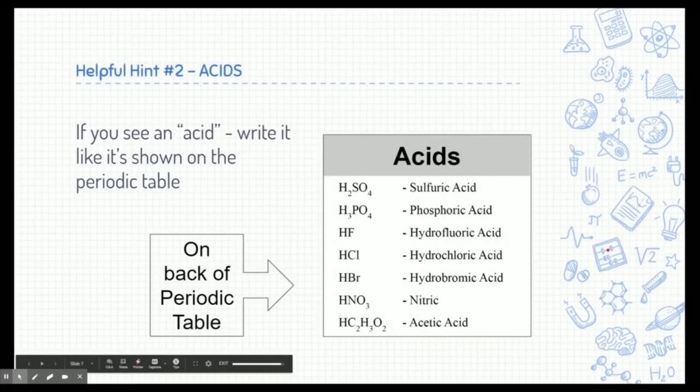All right, the second helpful hint when we write chemical reaction equations is acids. Now, we didn't get a chance to talk about acids this semester, but later on, if you were to take AP chemistry or chemistry two, we'll learn a little bit more about acids. For this, it's really easy. Just check on the back of your periodic table. There's a list of acids back there, so if you ever see acids in a chemical reaction equation, just write what you see on the back of the periodic table.